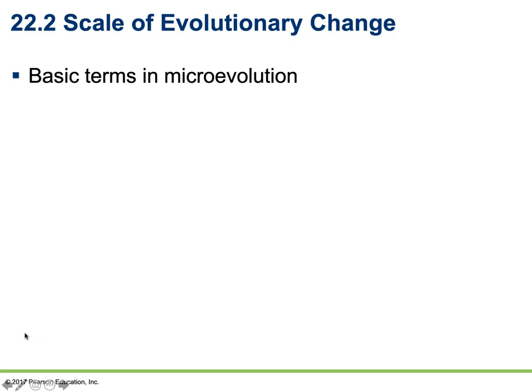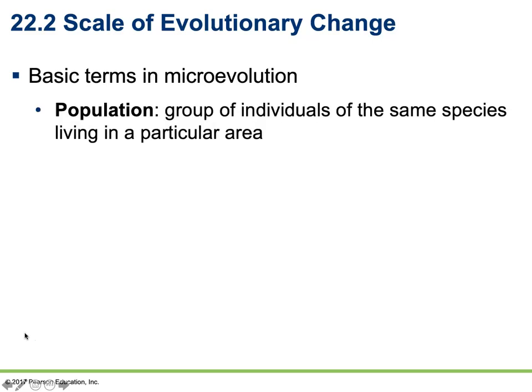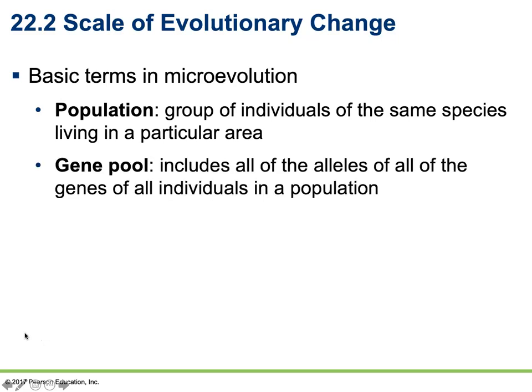Looking at basic terms of microevolution, there are a few terms and definitions helpful to know. A population is a group of individuals of the same species living in a particular area — for example, a herd of elephants around a watering hole. A gene pool consists of all the alleles of all the genes of all the individuals in that area. Genetic diversity can be introduced into a population through sexual reproduction and mutations.